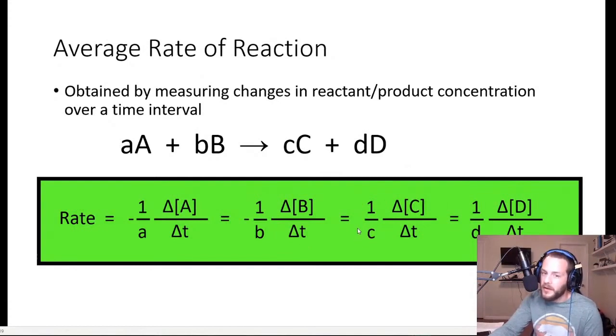No negative sign, remember, because C and D are products. You don't use the negative sign with products because the change in concentration of a product is already positive, so there's no need to multiply it by a negative number. 1 over c times delta concentration of C over delta t, which is also equal to 1 over d times delta concentration of D over delta t.